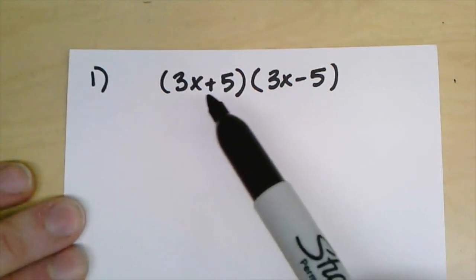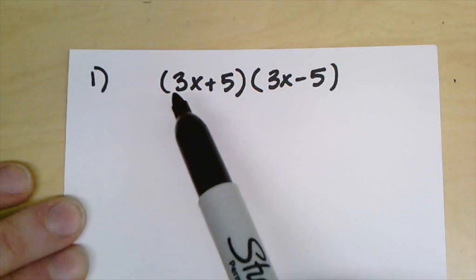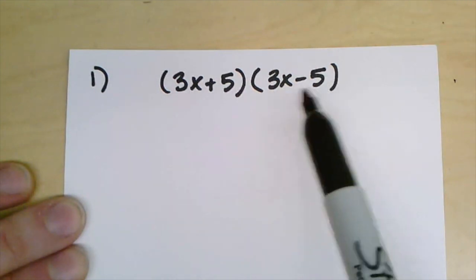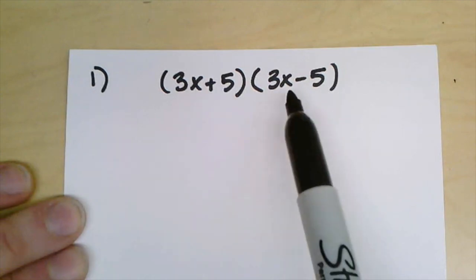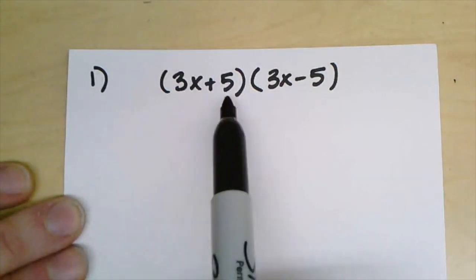For our first example here we have 3x plus 5 times 3x minus 5. Now you'll notice we have a term of 3x and a 5 and another term of 3x and a 5, and the only difference is that there's a plus and a minus here. This is a pattern we can use called the difference of squares.